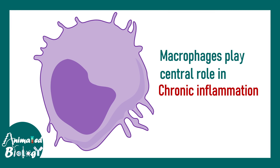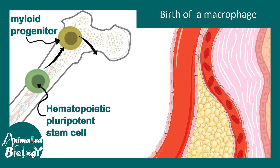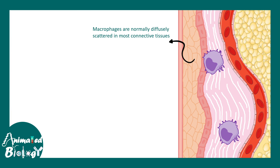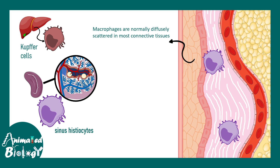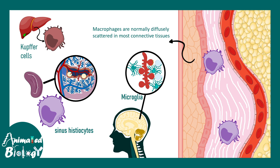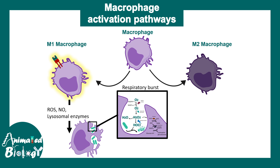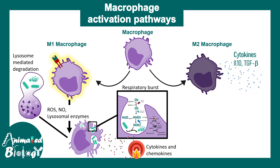Macrophages play a key role underlying chronic inflammation. They are born in the bone marrow from myeloid progenitor cells, forming monoblasts then monocytes; monocytes leave blood vessels and enter tissue space to become macrophages. Tissue-specific macrophages include Kupffer cells in the liver, sinus histiocytes in the spleen, and microglia in the brain. Macrophages have two activation states: M1 macrophages are pro-inflammatory and M2 macrophages are anti-inflammatory.